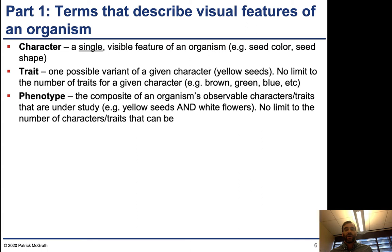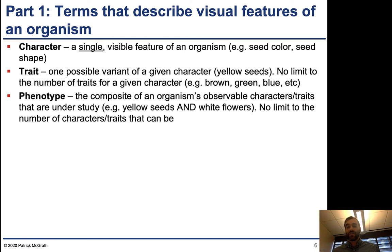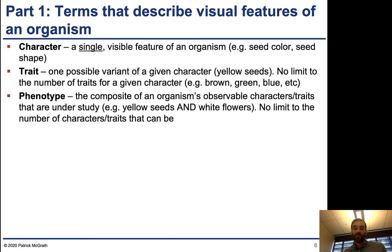A trait, in contrast, is one possible variant of a given character. Yellow seeds would be an example of that. There's no limit to the number of traits for a given character, so there could be brown seeds, green seeds, or blue seeds. In this chapter, we are limiting ourselves to the condition where there are only two traits per character, but this is not a rigid rule and will be relaxed in chapter four.